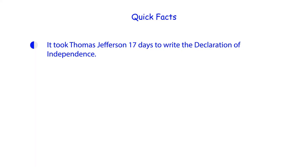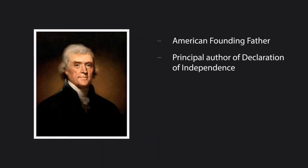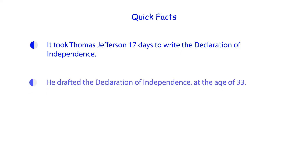Here are some quick facts. It took Thomas Jefferson 17 days to write the Declaration of Independence. Thomas Jefferson was an American founding father and the principal author of the Declaration of Independence of 1776, and he was the third president of the United States from 1801 to 1809. He drafted the Declaration of Independence at the age of 33.